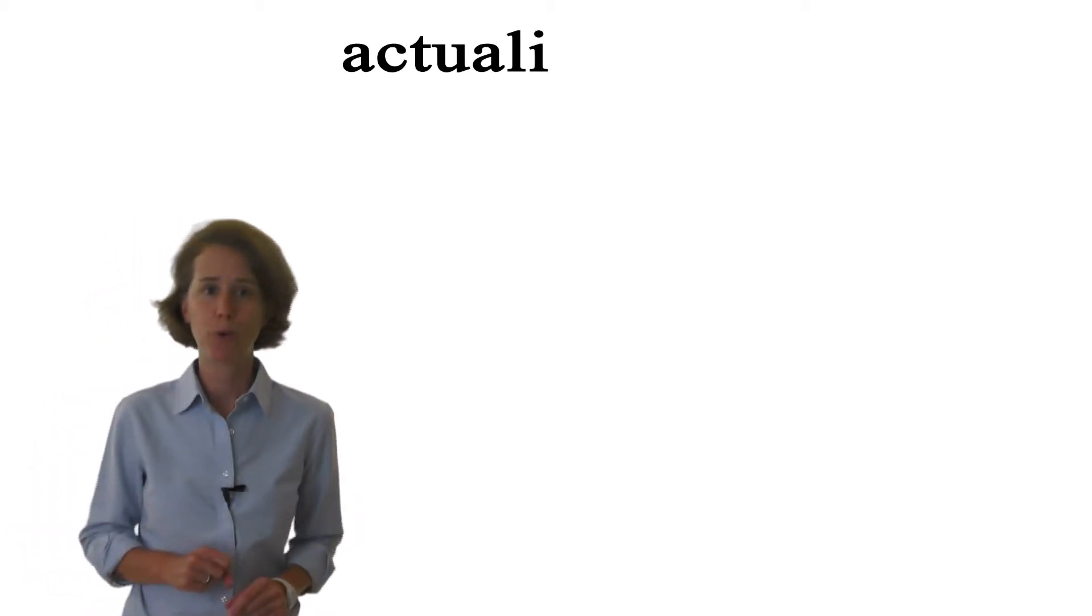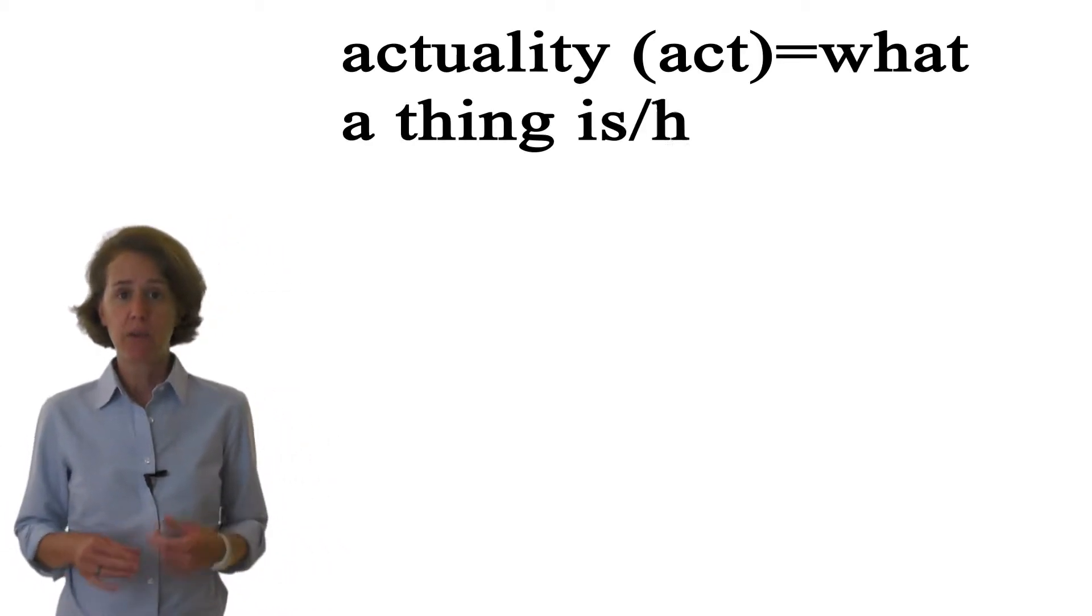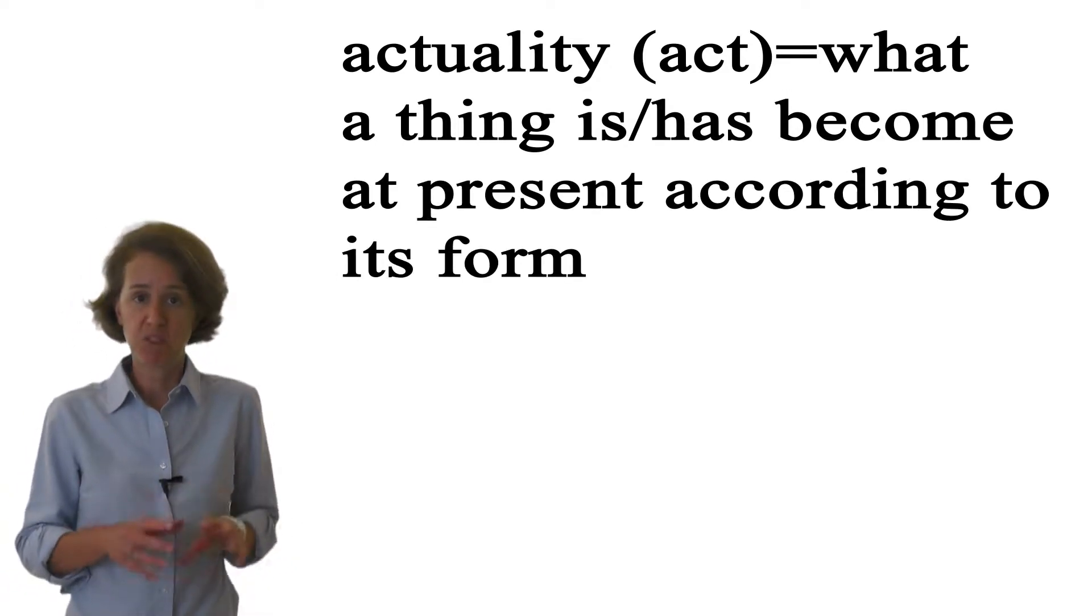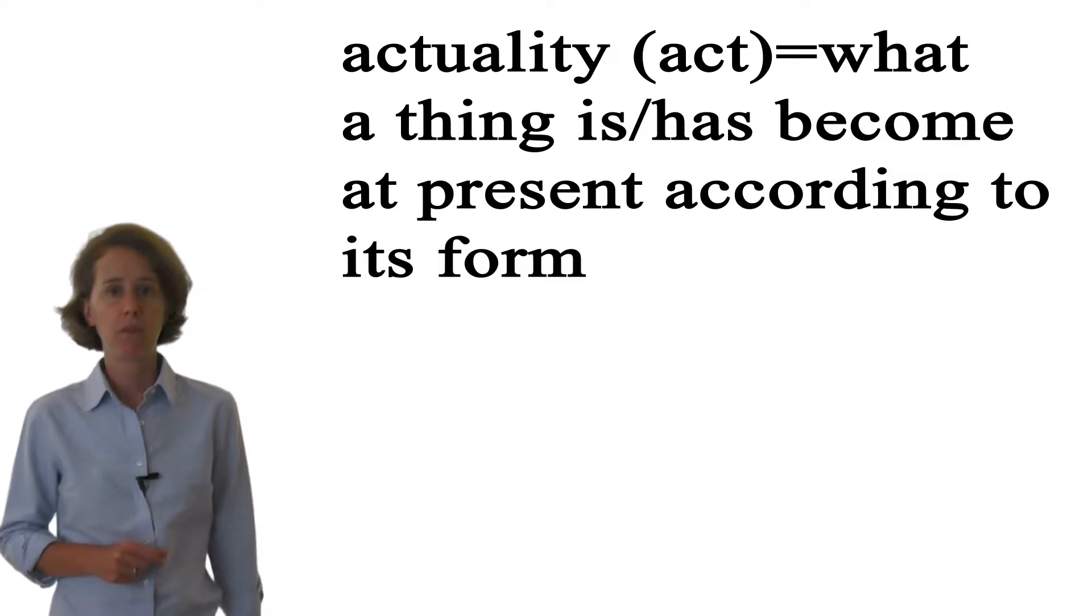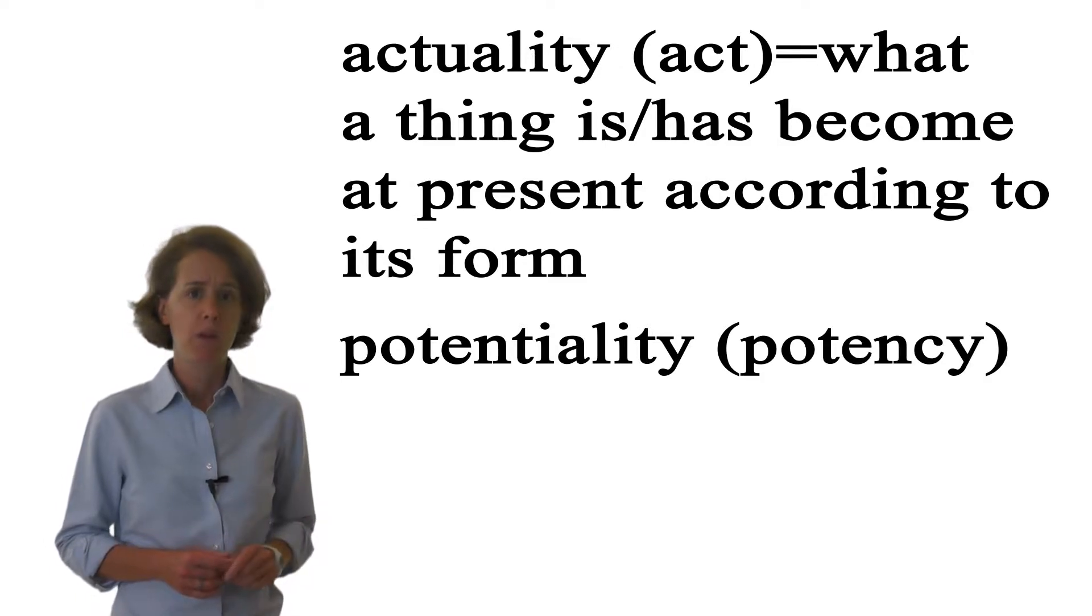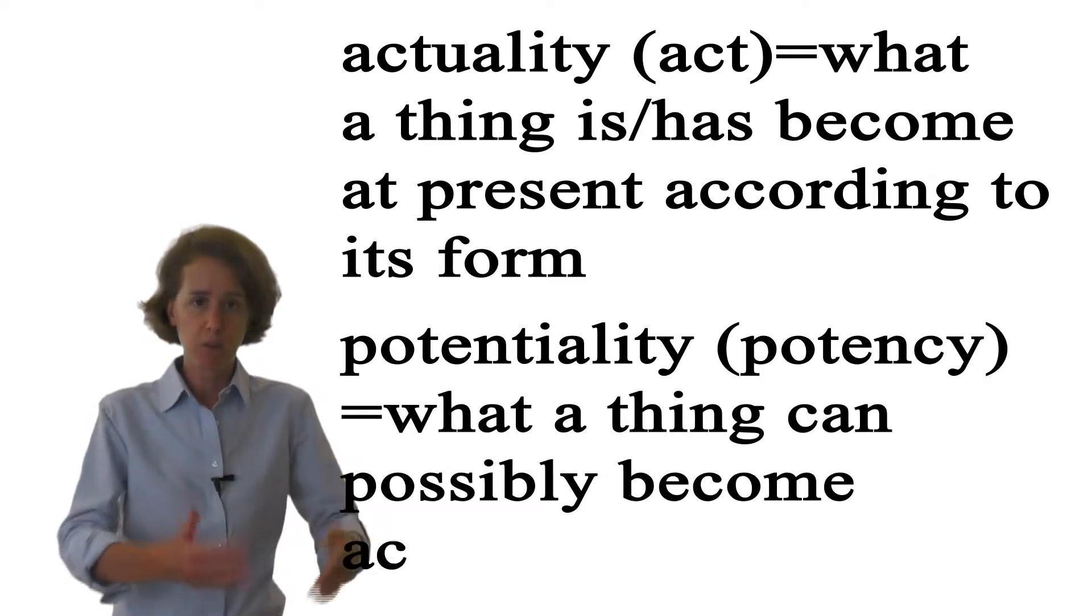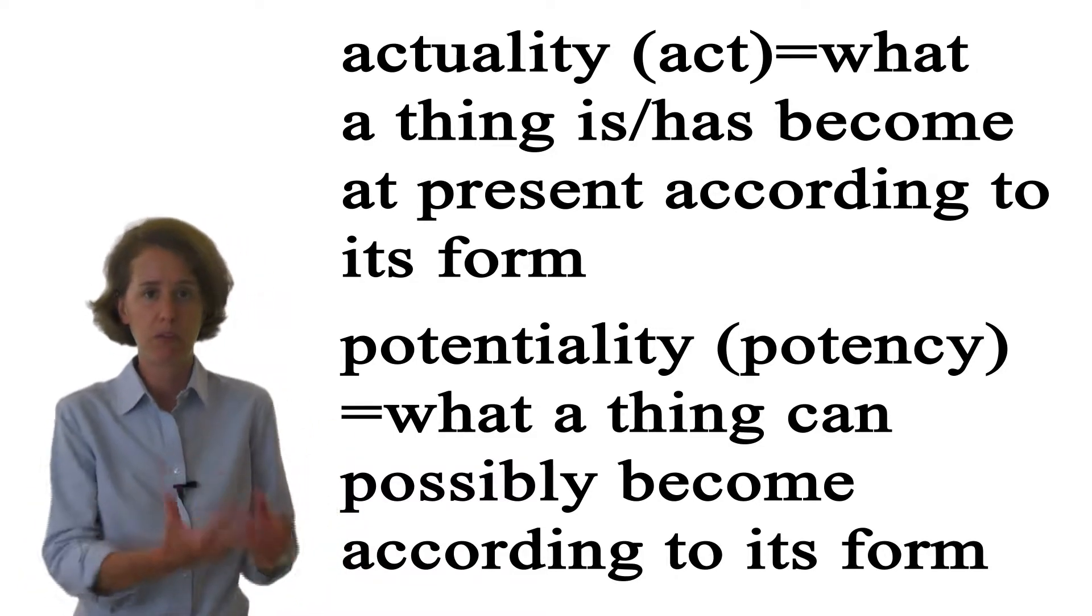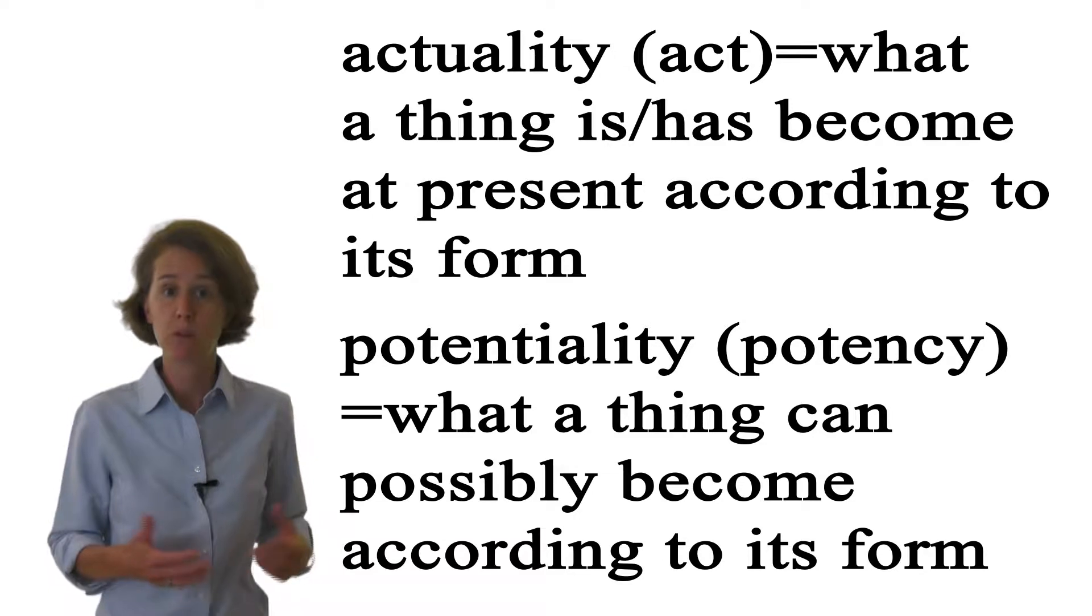So first we need to introduce two new terms for what we already know from experience. First, there's actuality, or just act for short. Act is what things are right now according to the way the form the thing has shaped its matter. Second, there's potentiality, or potency for short. Potency is what a thing could possibly become if its matter were reshaped or changed or permitted to develop according to its form.